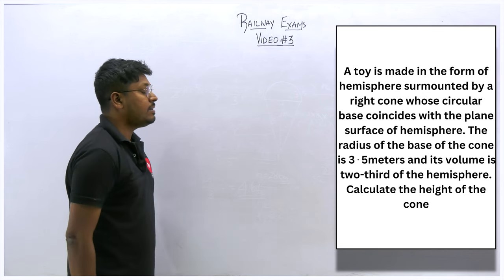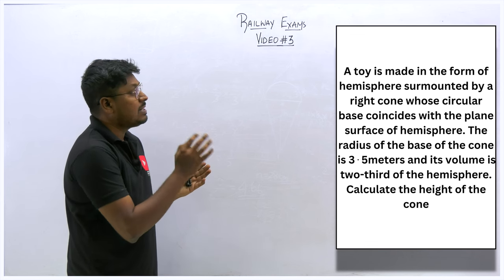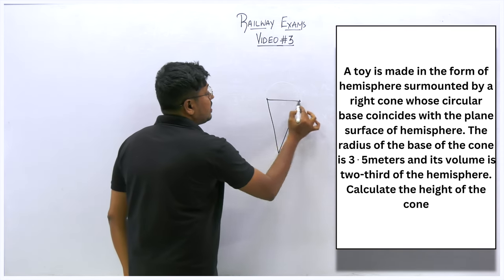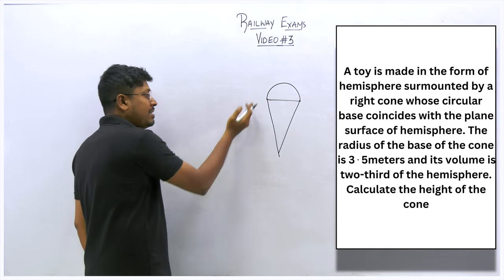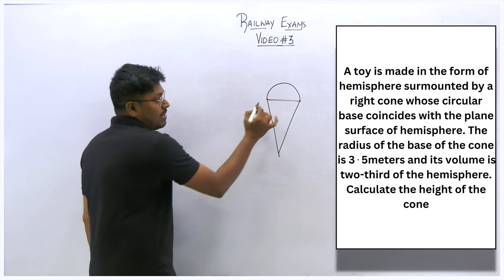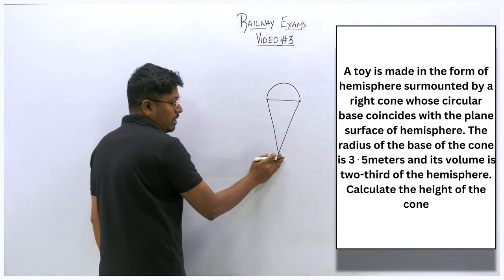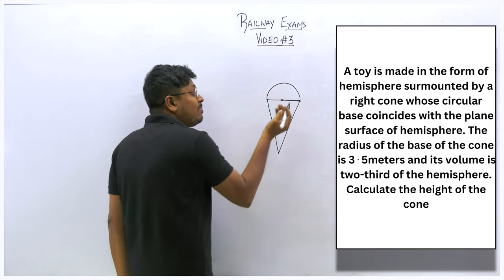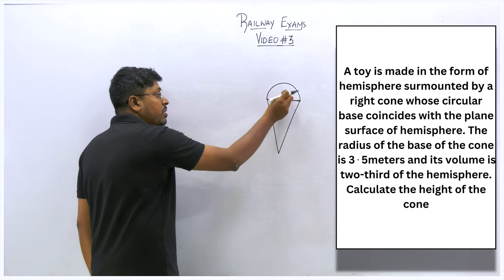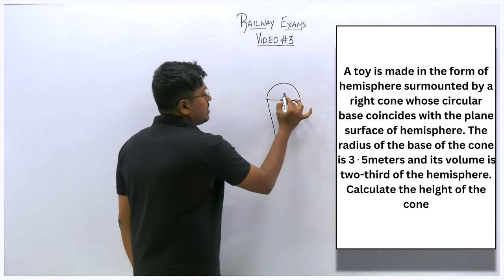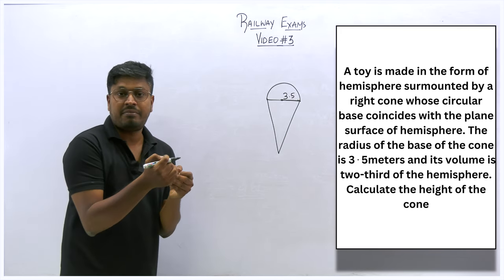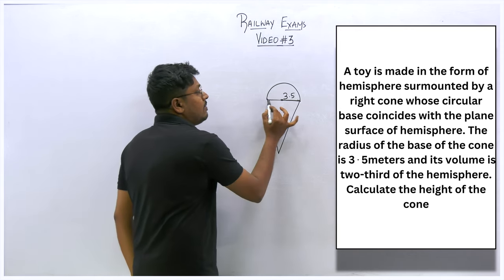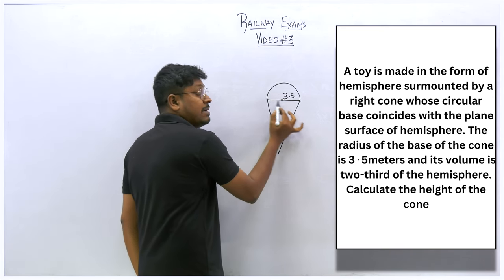Last question: a toy is in the form of a hemisphere surmounted by a right cone, with the circular base of the cone coinciding with the plane surface of the hemisphere. Since the base coincides, the cone radius equals the hemisphere radius, both 3.5 m.